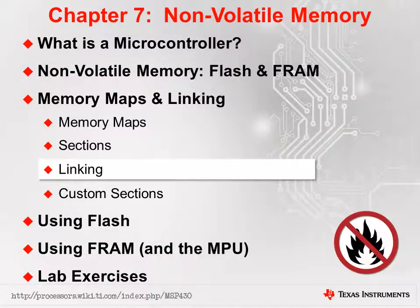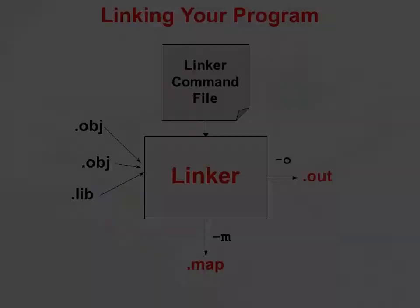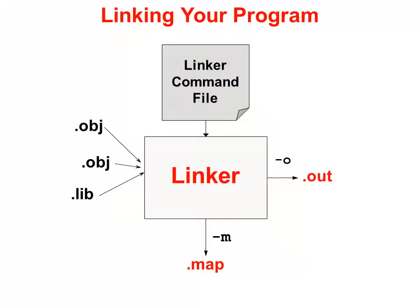Now that we've briefly discussed what memory is on our device and what sections of code and data we have in our programs, it's time to look at how the linker combines the two — that is, how it maps sections into memory locations. The linker tool combines object code, coming from your compiled source files and from libraries, into an executable output file. Along with the executable .out file, the linker also creates a map file, which is a report describing where all the sections and global symbols were allocated. The linker command file is the key to making all of this work.